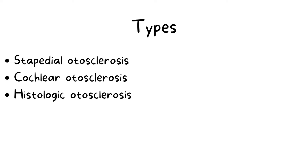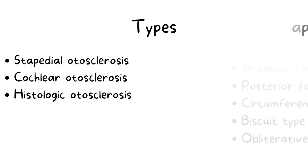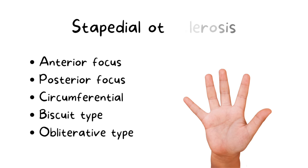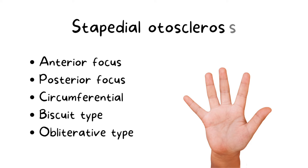Broadly, we can classify otosclerosis into three types: stapedial, cochlear, and histological otosclerosis. Stapedial otosclerosis is the one involving the stapes, as the name suggests. It is further subdivided into five types based on the pattern of involvement.